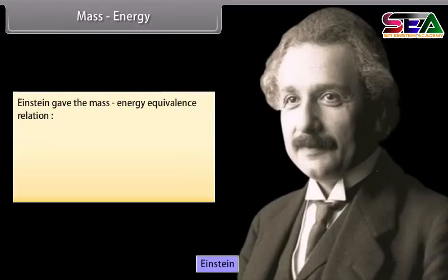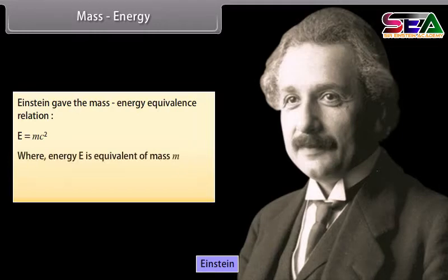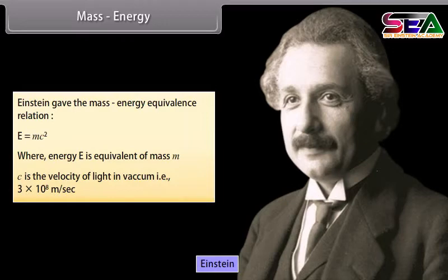Mass-energy: Einstein gave the mass-energy equivalence relation E = mc², where energy E is the equivalent of mass M, and c is the velocity of light in vacuum, that is 3 × 10⁸ meters per second.